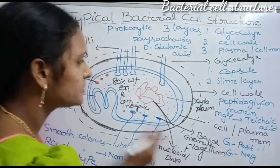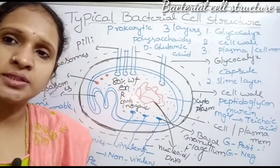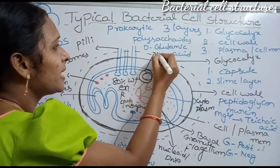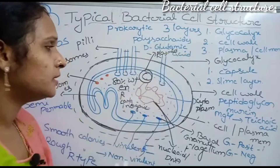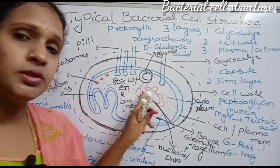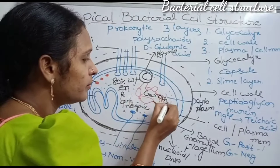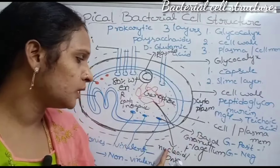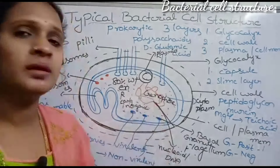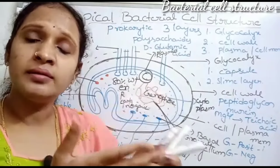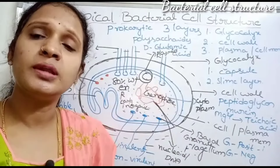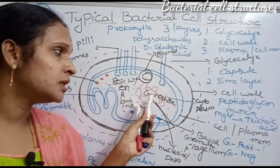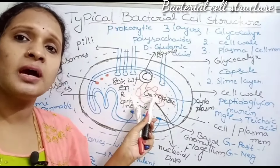Bacterial cells have two types of genetic material: main genetic material and extra genetic material. The main genetic material is called the genophore, also known as bacterial chromosomes or nucleoid. The nucleoid is the naked DNA structure present only in prokaryotic organisms, with no surrounding membrane.